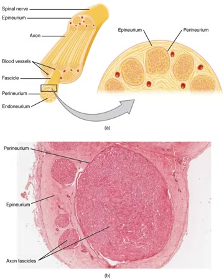Nerve growth normally ends in adolescence, but can be re-stimulated with a molecular mechanism known as "notch signaling".